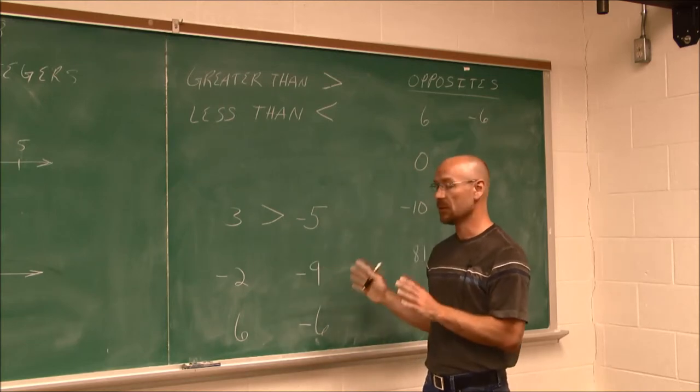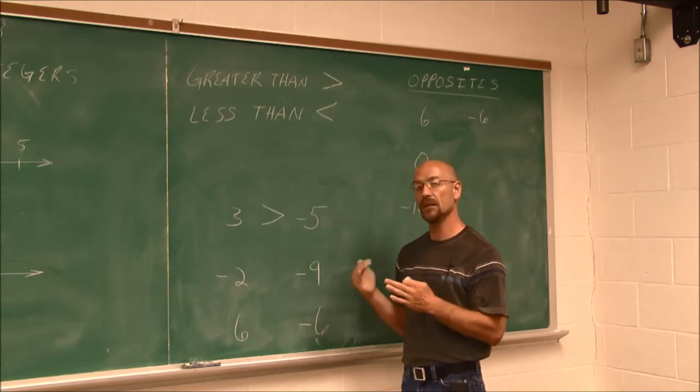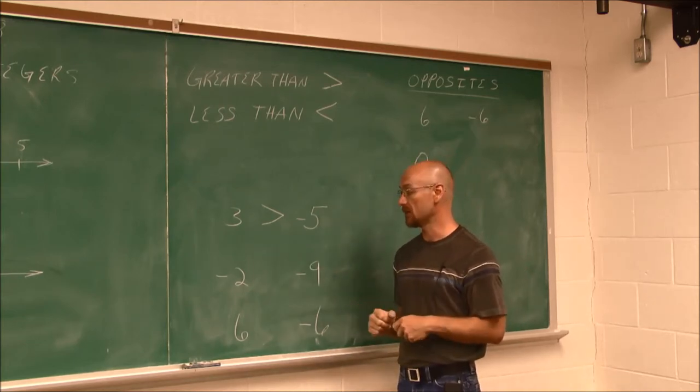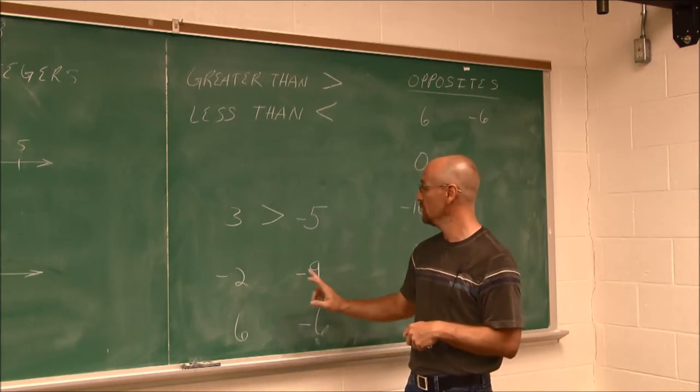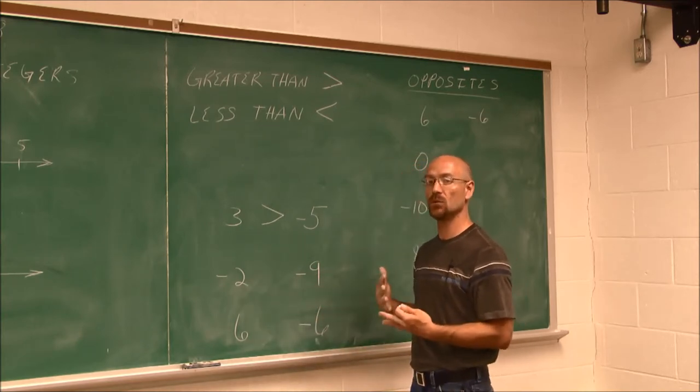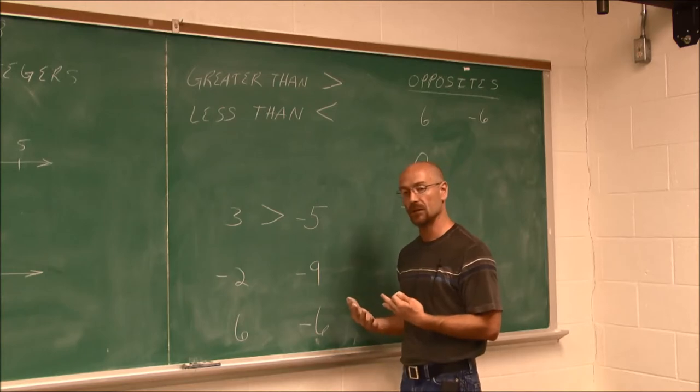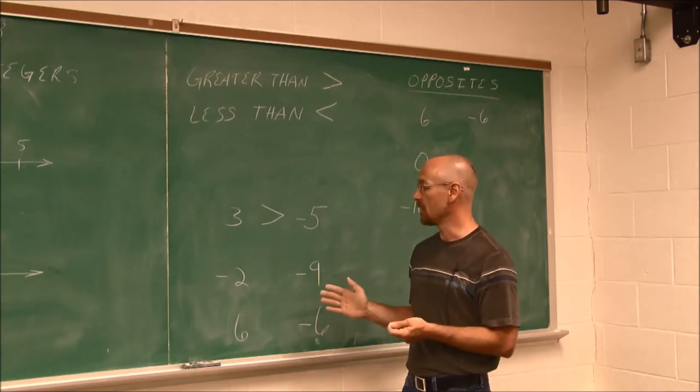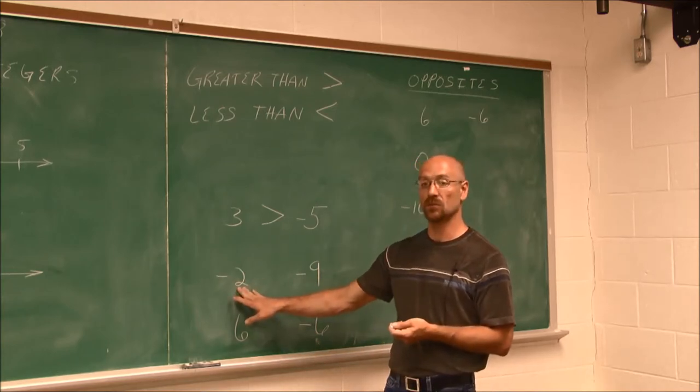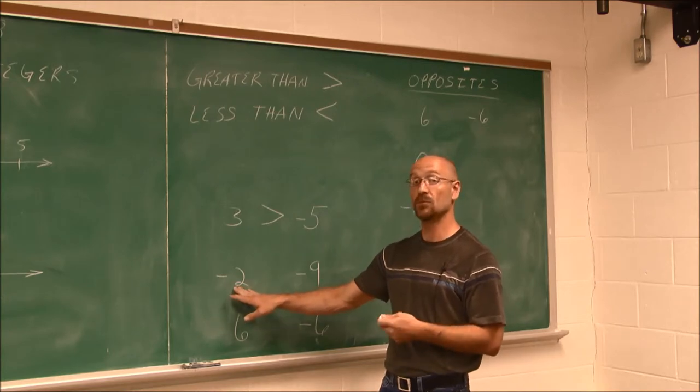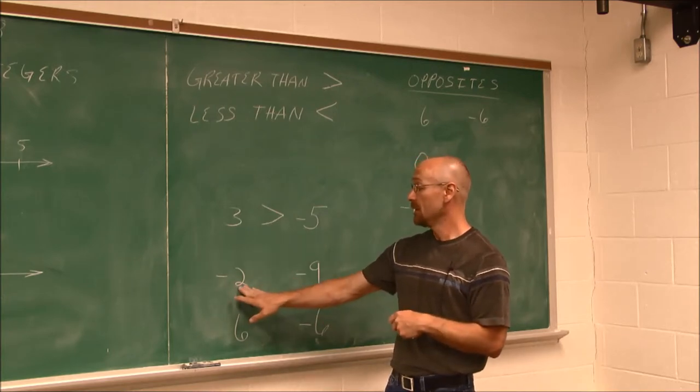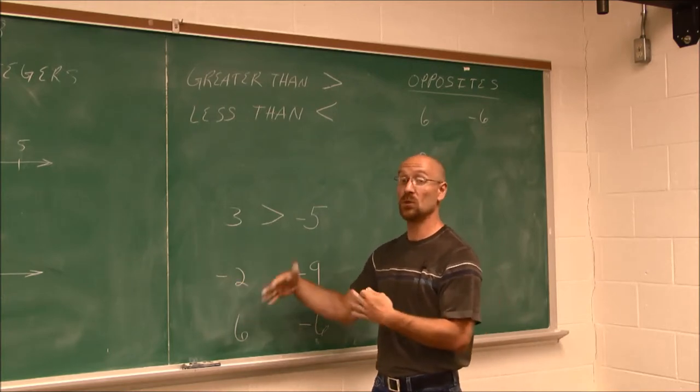Look at the next example. This is a little bit different. We have to think about it, maybe visualize a number line. We have negative 2, negative 9. Which is the greater value or the lesser value? If we think about a number line, this is only two spots from 0. Yes, it's negative. We're to the left of 0.